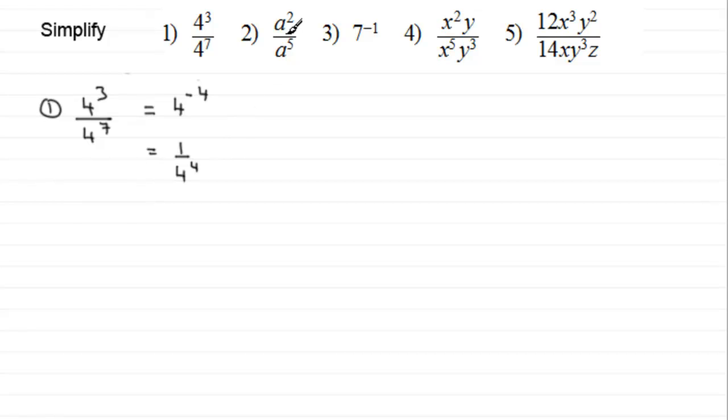Number 2, a squared divided by a to the power 5. To simplify this one, they're in the same base, base a, so we subtract the powers. We've got base a, and 2 take away 5 is minus 3. We don't leave it like that. a to the minus 3 is the same as 1 divided by a to the power 3, or 1 over a cubed.